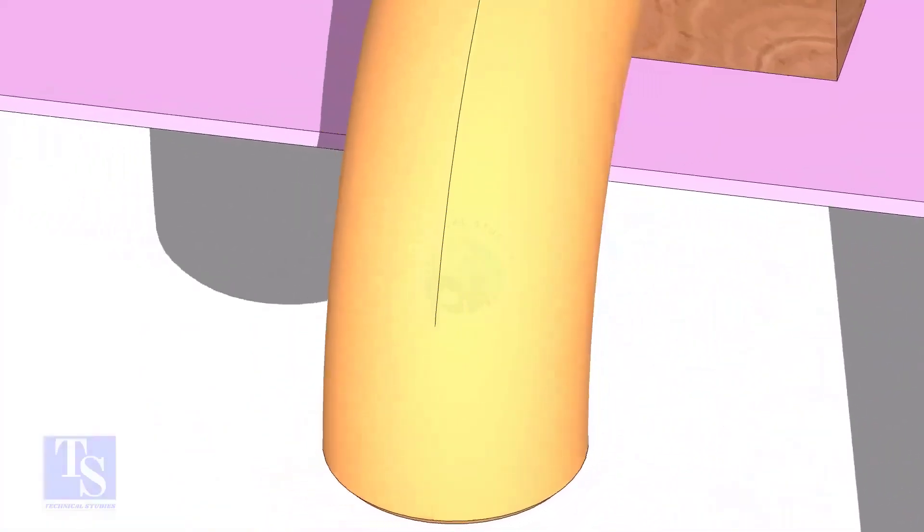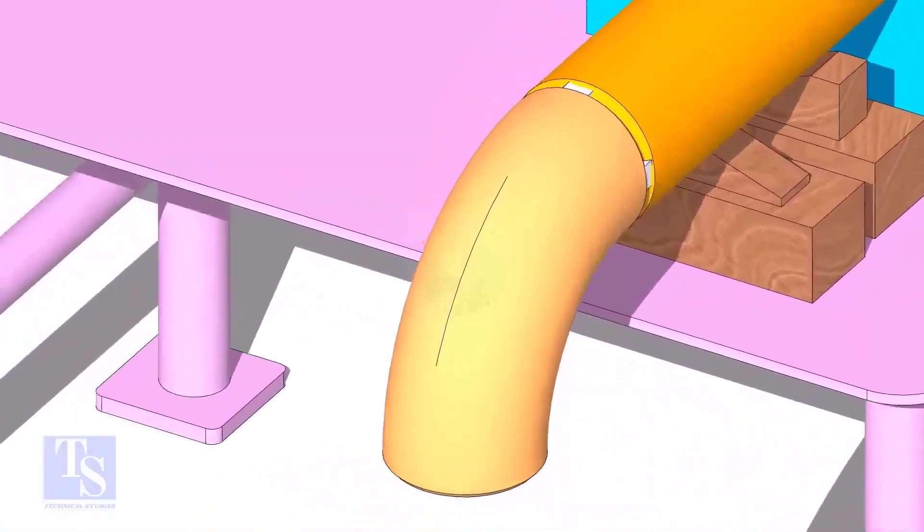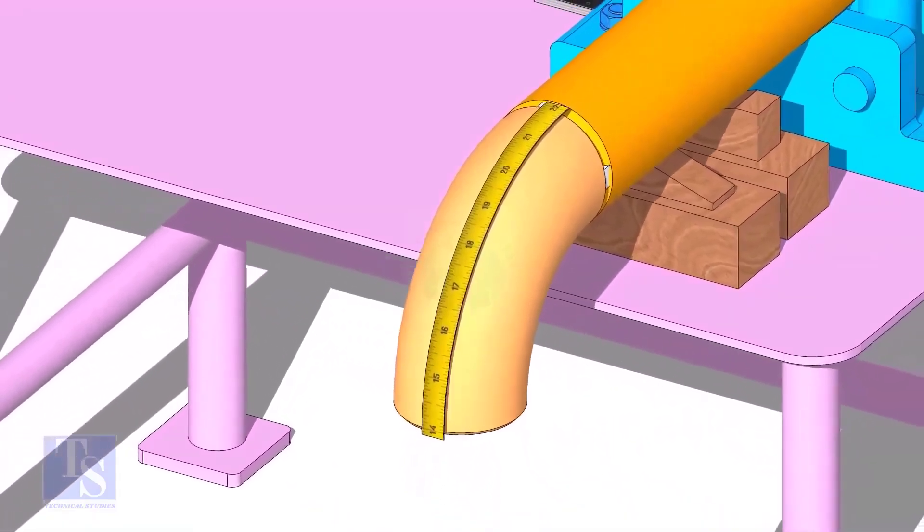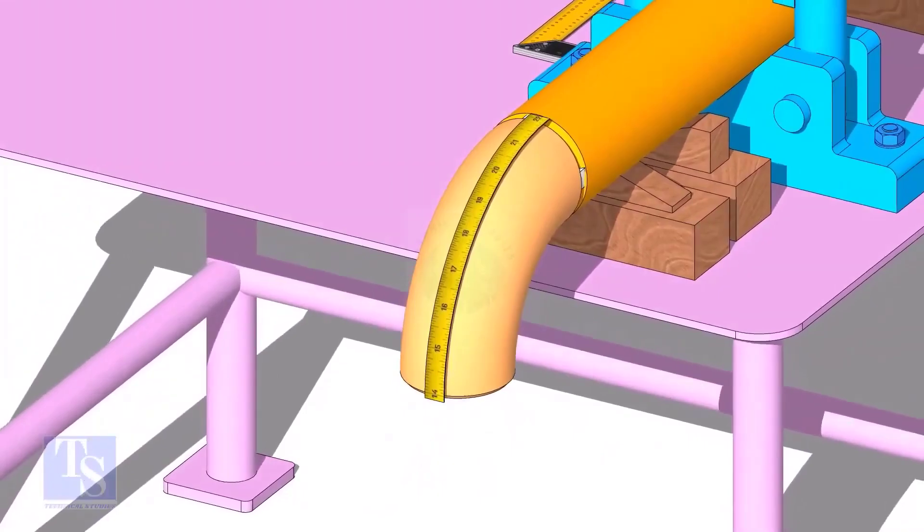Draw a line connecting these marks. Measure the outer circumference of the elbow and mark the half circumference on the center line, as shown.